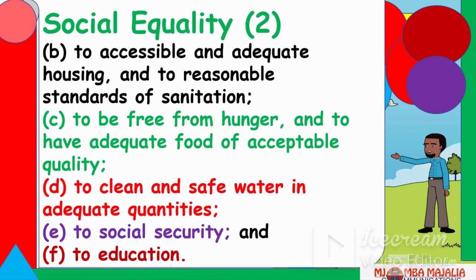You are not supposed to be hungry — that's why the government distributes food. It's unfortunate that in Taita Taveta during a hunger crisis, 21 MCAs went to enjoy themselves in Zanzibar, squandering eight million shillings. That's how unfortunate leadership can be. People should also have access to clean and safe water in adequate quantities — water is a big issue all over the country. They should also have access to social security.